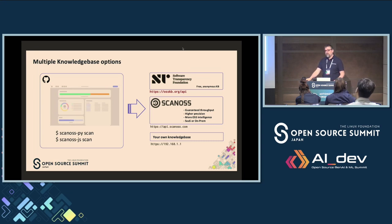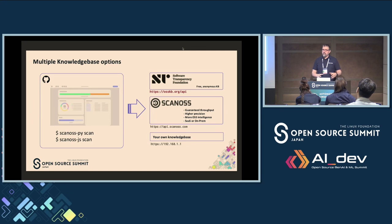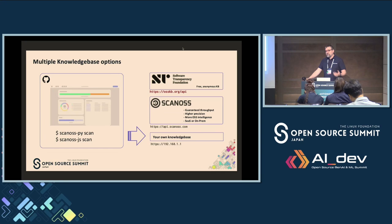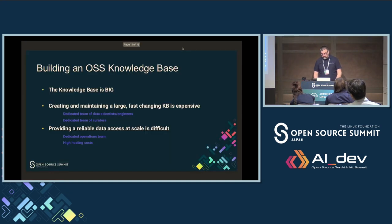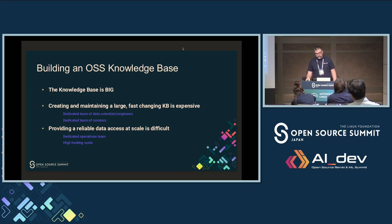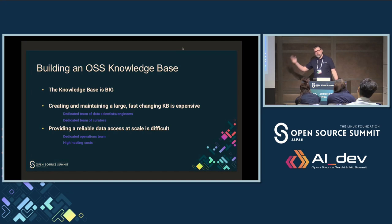Most of our customers prefer on-premise — they are large corporations with internal security requirements for having this kind of tooling on-prem. You can also make your own UI for a specific use case, like scanning against GPL3 code, and point it to your local host or a machine on your network. Building the big commercial knowledge base is not easy — you can do it with our tooling, but it involves downloading millions of URLs and you find a lot of issues. Creating the knowledge base is expensive.